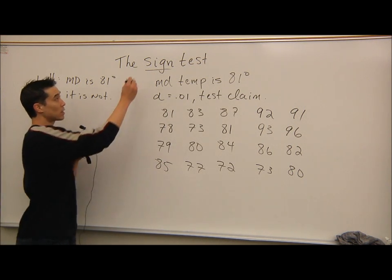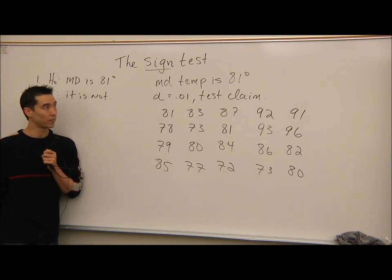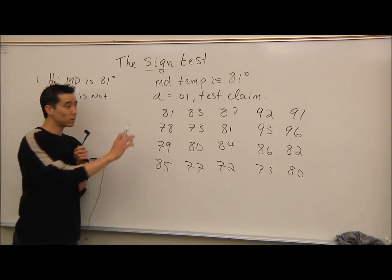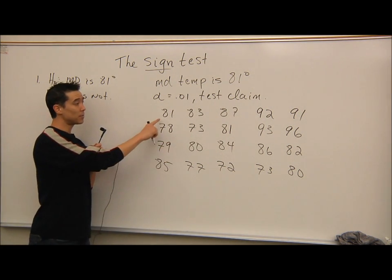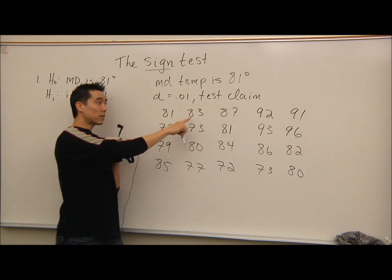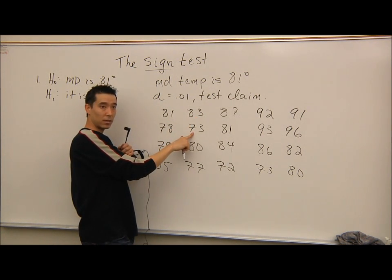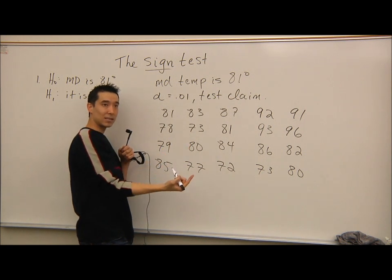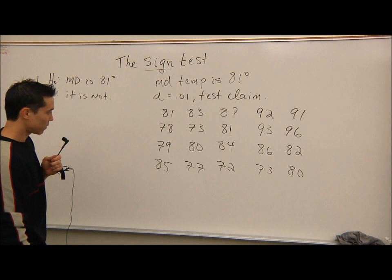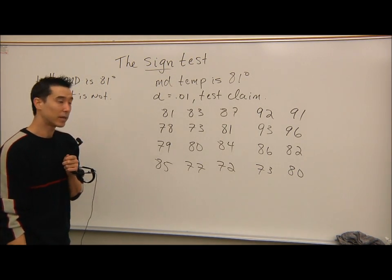This is called the sign test because we're going to look at plus signs, minus signs, and if there's a tie, we put a zero. We go through each temperature — if it's the same as the median, put a zero; if it's bigger, put a plus sign; if it's smaller, put a negative sign. Then we count these signs.